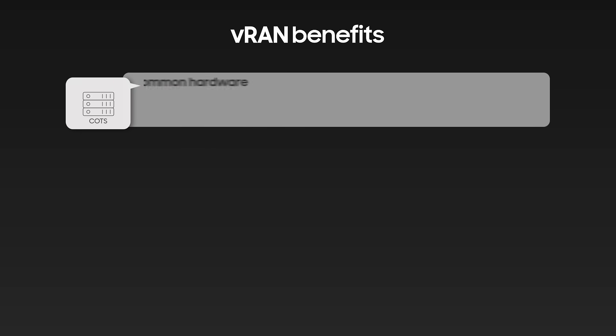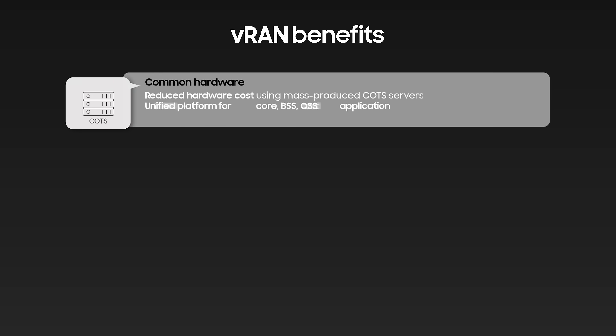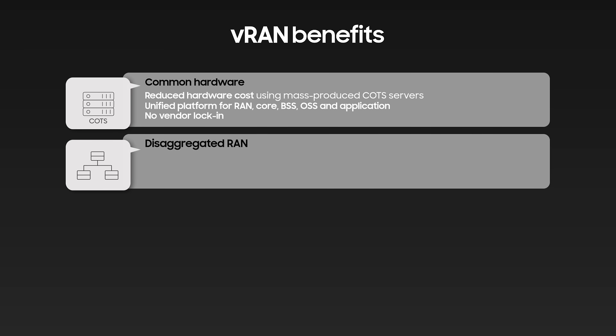Samsung's V-RAN runs on an end-to-end common platform shared with other network parts such as the core, management systems, and applications, which reduces hardware, operation, and management costs. Samsung's V-RAN is a disaggregated architecture with separated vDU and vCU.